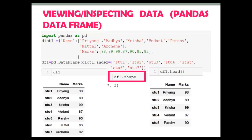In our dataset we have 7 rows and 2 columns. It is also possible to unpack and store them in separate variables, which I will show you practically shortly in the Jupyter Notebook.